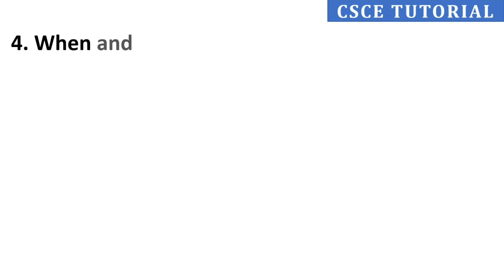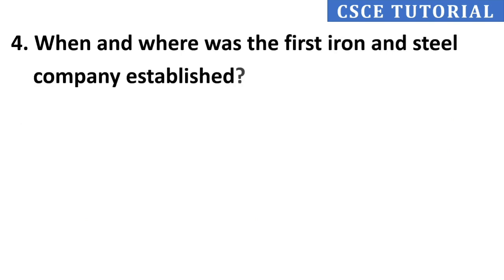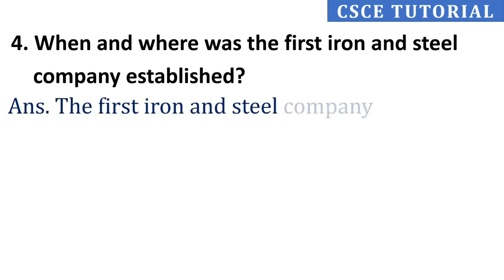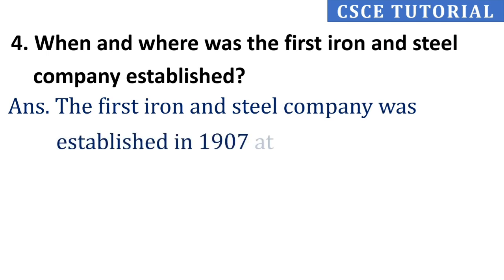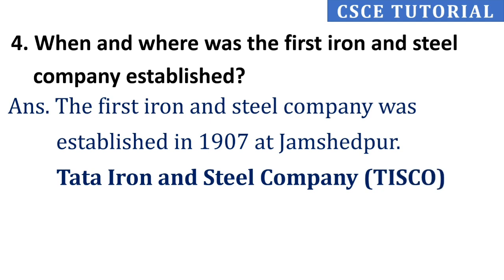Fourth question: When and where was the first iron and steel company established? Its answer is, the first iron and steel company was established in 1907 at Jamshedpur, known as TISCO — Tata Iron and Steel Company.